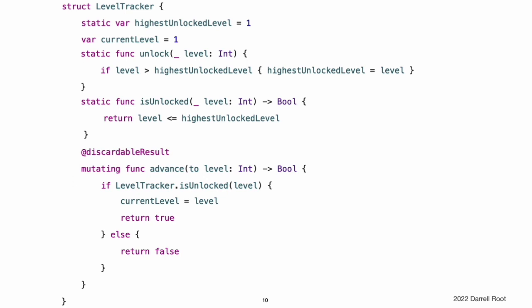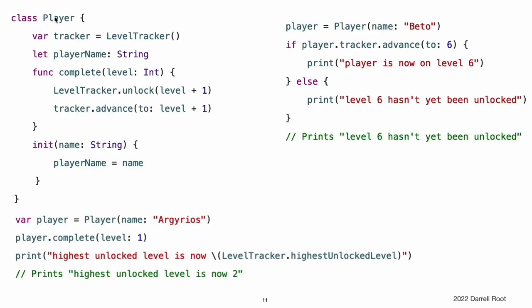For more information about this attribute, see attributes. The levelTracker structure is used with the player class to track and update the progress of an individual player. The player class creates a new instance of levelTracker to track that player's progress. It also provides a method called completeLevel, which is called whenever a player completes a particular level. This method unlocks the next level for all players and updates the player's progress to move them to the next level. The boolean return value of advance2 is ignored because the level is known to have been unlocked by the call to levelTracker.unlock on the previous line. You can create an instance of the player class for a new player and see what happens when the player completes level 1. If you create a second player whom you try to move to a level that is not yet unlocked by any player in the game, the attempt to set the player's current level fails.